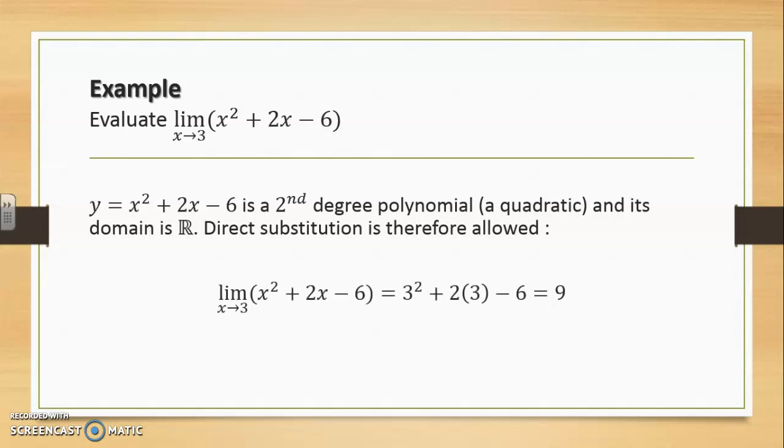So the limit as x approaches 3 of x squared plus 2x minus 6 is calculated by replacing x by 3. So 3 squared plus 2 times 3 minus 6 equals 9. Graphically, this means that as x approaches 3, y values of this parabola are heading towards 9.